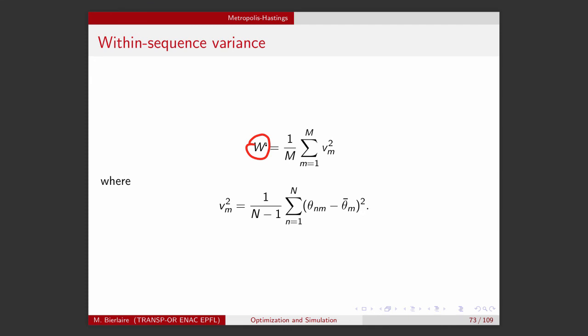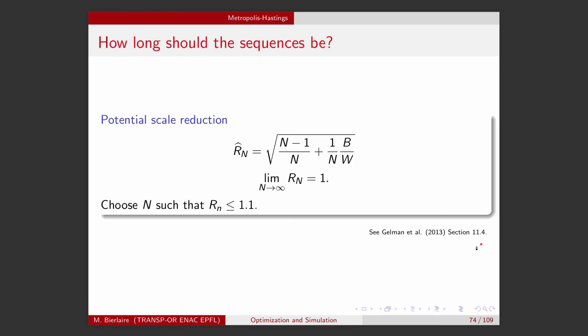I refer you to this book if you are interested in the detail, but the bottom line is that the quantity, which is denoted r hat n here, which is a function of the between sequence and the within sequence variances that we have just derived, it can be shown that it converges to 1.